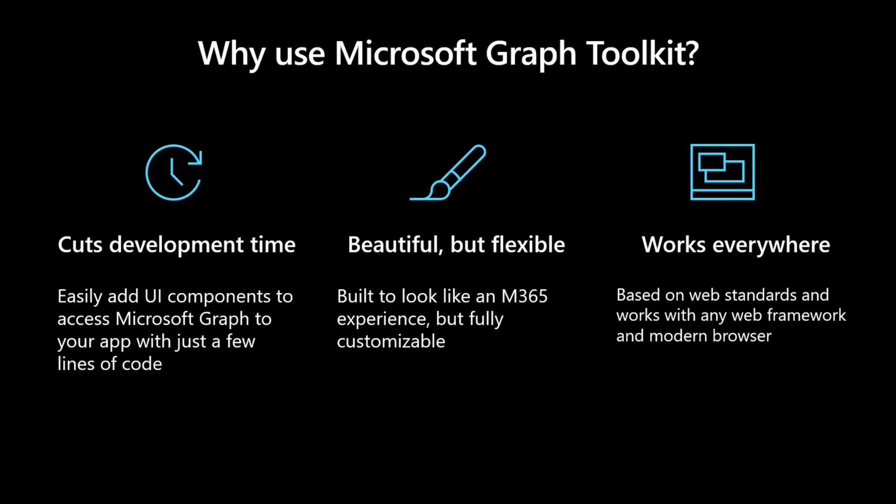Why use the Toolkit? It cuts development time because you can easily add any UI components to your app — any type of web app — and it automatically gets access to Microsoft Graph, abstracting all that complexity. It's beautiful but also very flexible: if you love M365, you get the look out of the box, but you can customize all settings to make components look exactly how you want. It works everywhere based on web standards and any web frameworks — Teams, SharePoint Framework, Electron, or as a SPA.